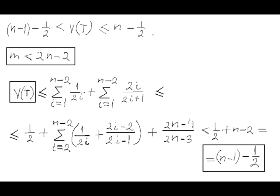Also, of course, 2n minus 4 over 2n minus 3 is less than 1. The result is that the total value of our set of coins is strictly less than 1/2 plus n minus 2, or we can write it as n minus 1 minus 1/2, which contradicts our assumption that this total must be strictly greater than n minus 1 minus 1/2. We are done! I'm glad.